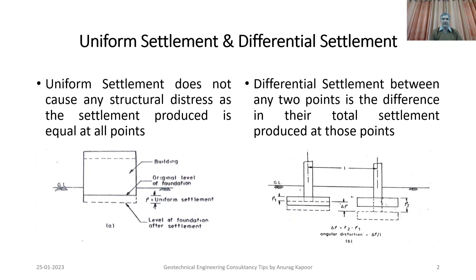The settlement p is shown as the uniform settlement, and the level of foundation after settlement is shown as another dashed line beneath the ground level. In comparison, a right-hand side figure shows two footings with settlement p1 on the left and p2 on the right. The differential settlement between any two points is the difference in their total settlements at those respective reference points, so delta p equals p2 minus p1.